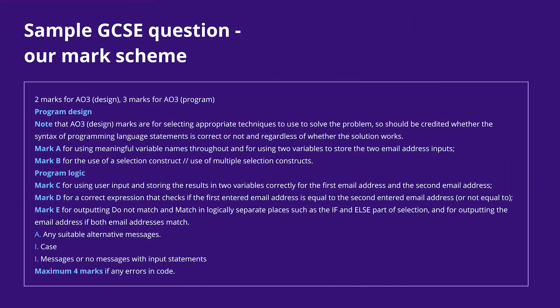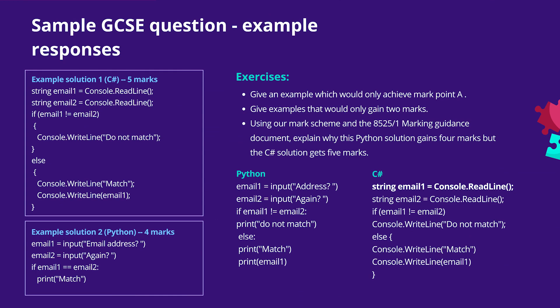This was our mark scheme. We awarded two design marks and three programming marks. The design marks were for using meaningful variable names throughout, together with having two variables to store the email address inputs, and for using one or more selection constructs. The programming marks were for storing the user input in two variables correctly for the email addresses, having a correct expression to check if the email addresses match, and for outputting the correct messages and email address. Solution 1, written in C-sharp, is fully working so received all five marks. Solution 2, written in Python, received four marks — mark point E was not awarded as there is no attempt to output the second message and the email address is not output either.